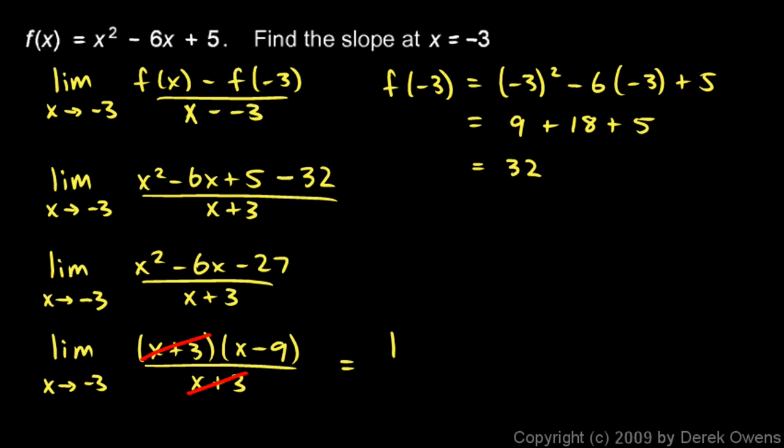So this just equals the limit as x approaches negative 3 of x minus 9. And that's easy. You can practically do that at a glance. As x gets really close to negative 3, this will get really close to negative 12. And that's our answer. That's the slope of this function, that parabola, when x is equal to negative 3.